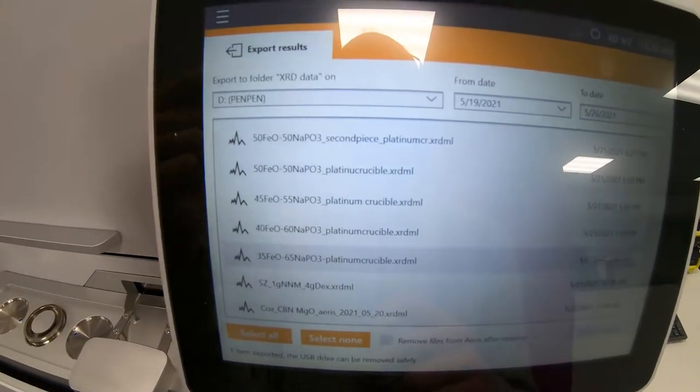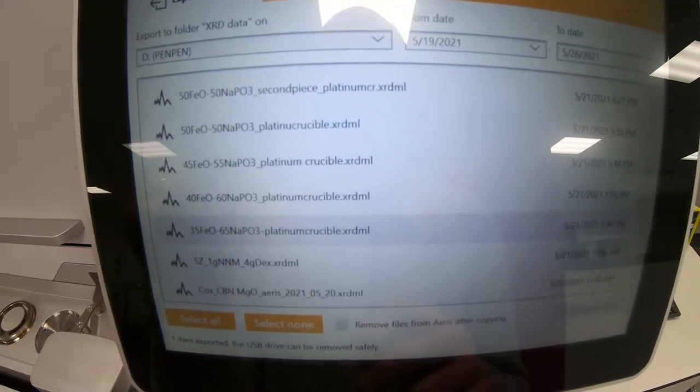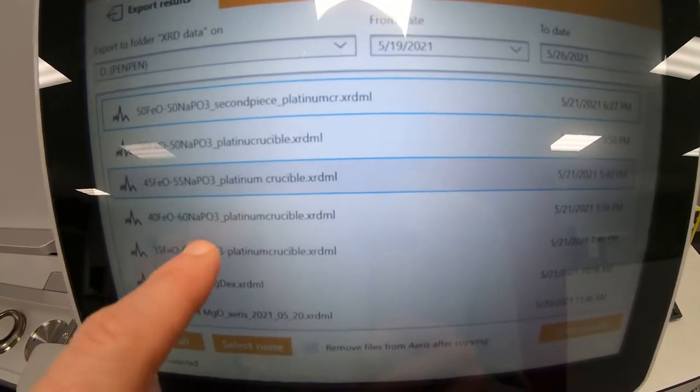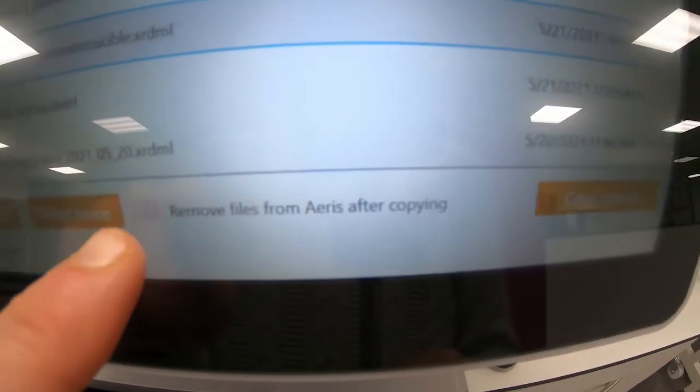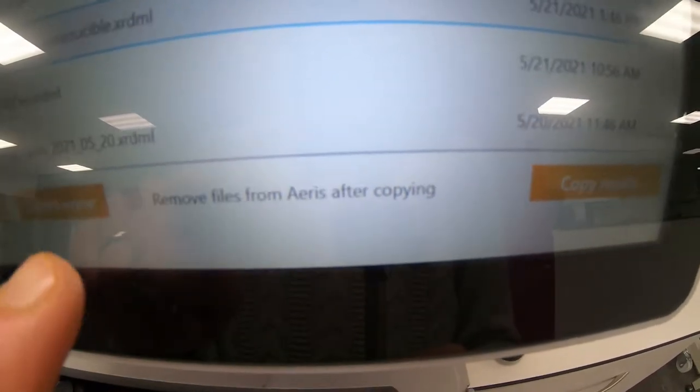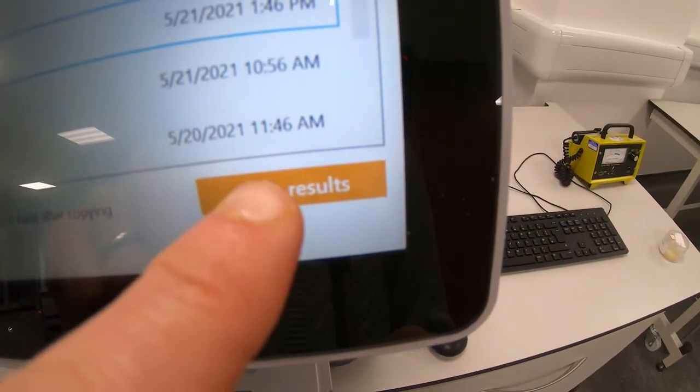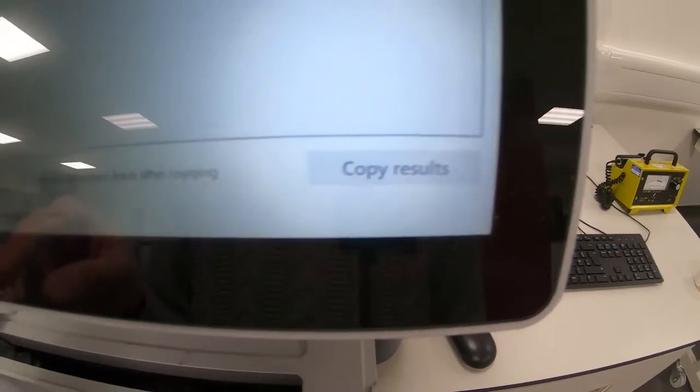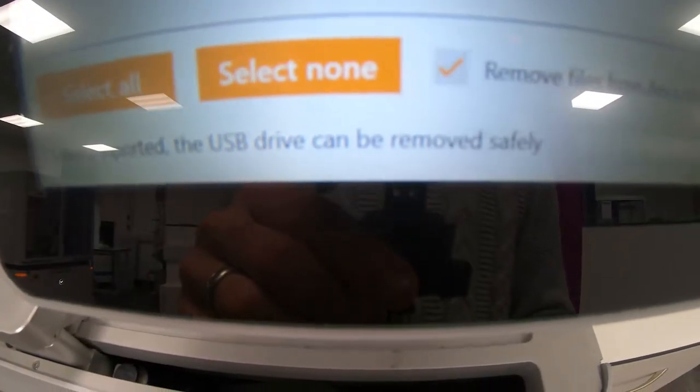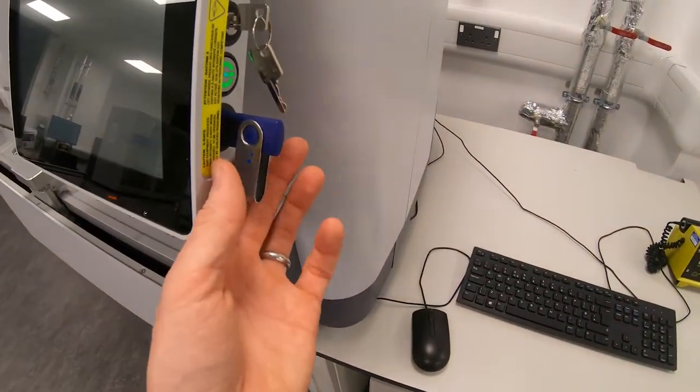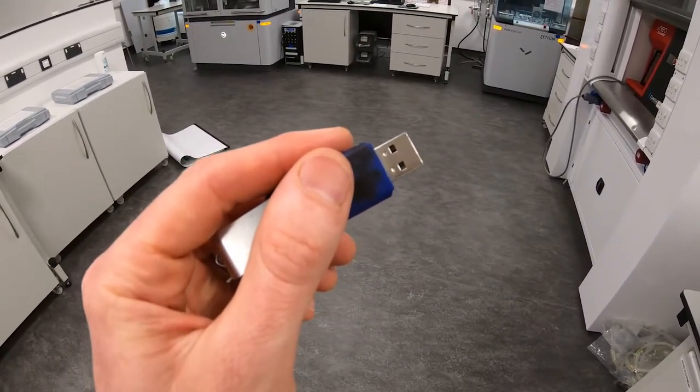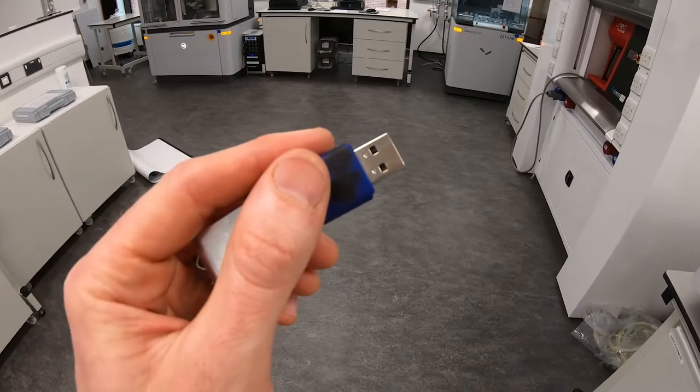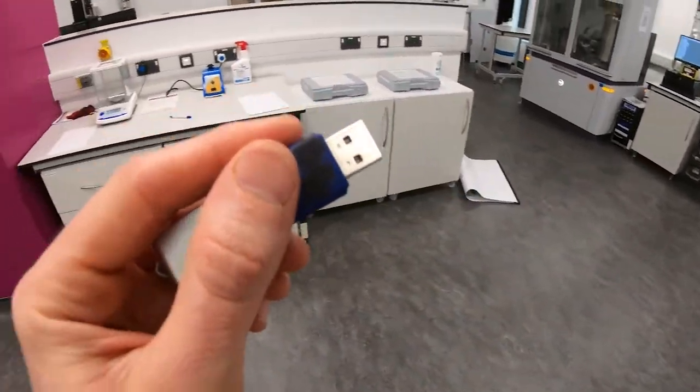You see, we can't select the silicon data that we've just experimented because it hasn't finished yet. But if I wanted to copy a certain result, I select them. These are the ones that I want. You press down here on copy results. You can also select here if you want to remove the files after copying them. Select copy results. It says there, three items have been exported. The USB drive can now be removed safely. So now I can take my files. On here when I load it up, there will be a folder that says XRD. When we open that up, we'll be able to collect our data. They are in XRDML format, which is the standard for all Panalytical instruments.